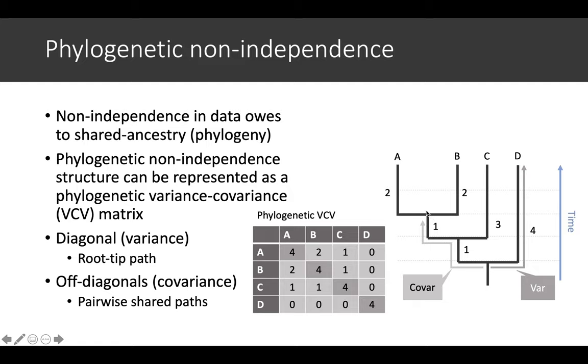If we look at C and A, the shared common pathway is just this one unit of time, and that's the same for B and C. Then D doesn't have any shared pathway with any of these others, so it's all zeros.